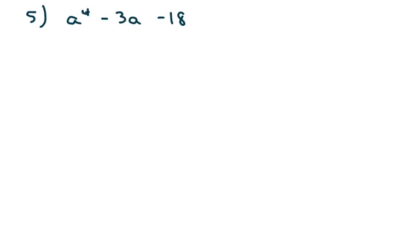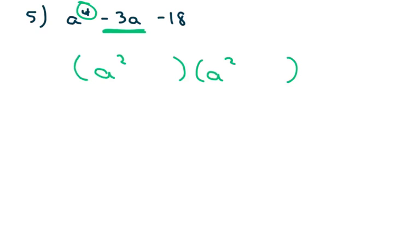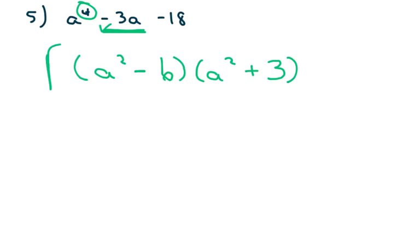The next one — the degree is 4, so as in the previous video, I'm just going to put a squared and a squared. I need a 3a, so I think 6 and 3 will work. I'm going to put 6 and 3 — one's positive, one's negative. Since this is negative, I'm going to make my bigger number negative. I can't factor this anymore, and that's all we have.